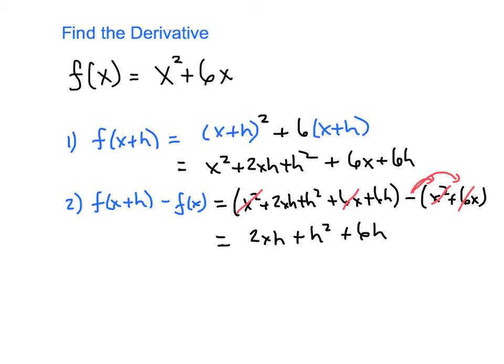And then we're going to make our quotient. And when we do the quotient, we're going to divide by h. So that's f of x plus h minus f of x divided by h. And basically that means we're going to do 2xh plus h squared plus 6h divided by h. And quite a few h's are going to cancel.